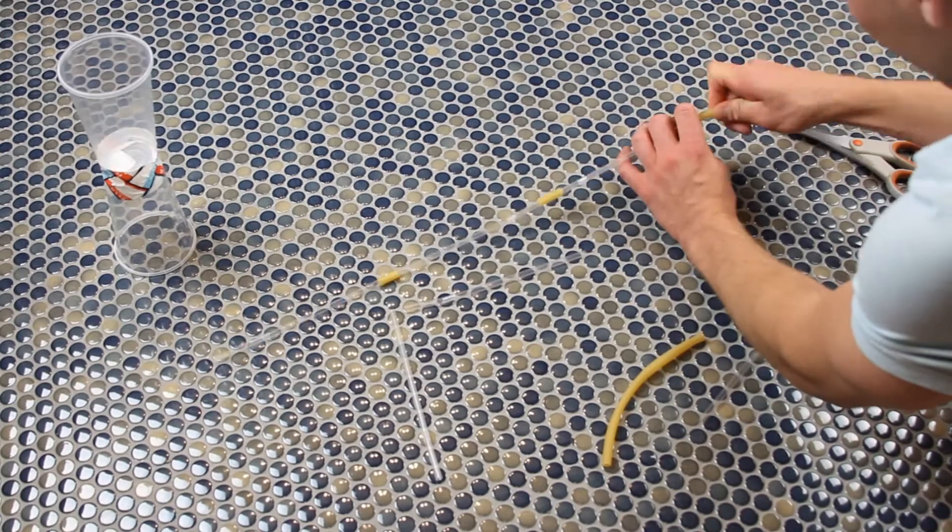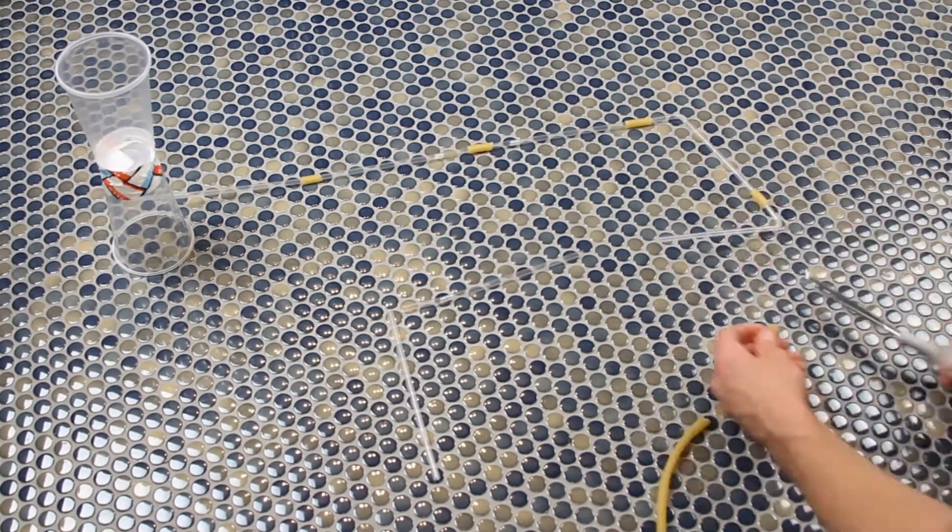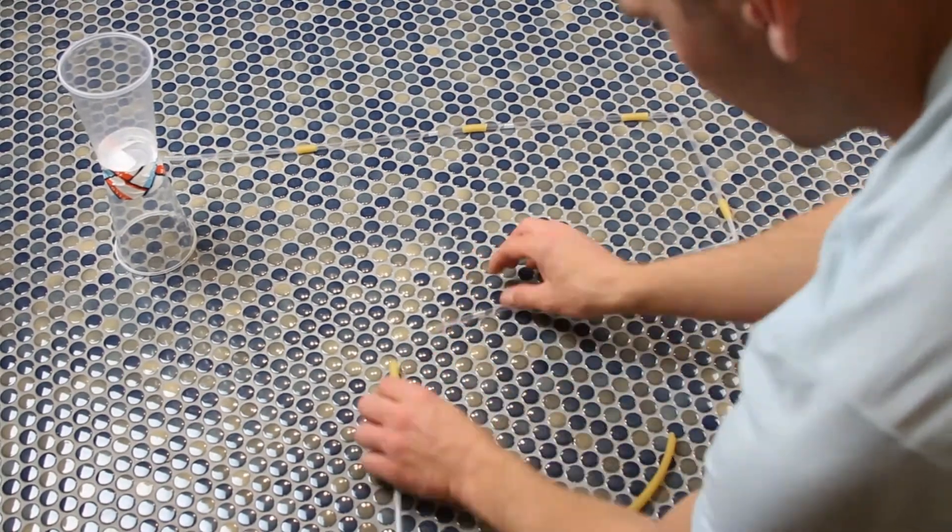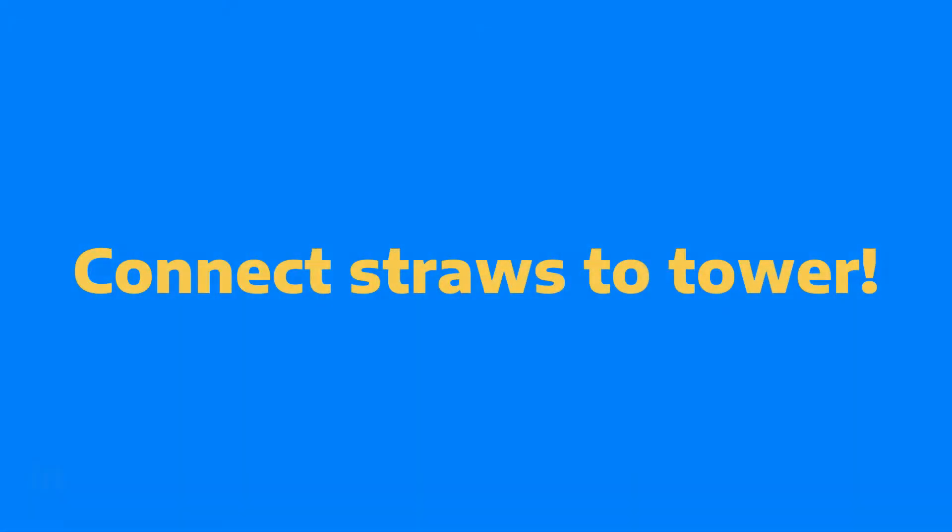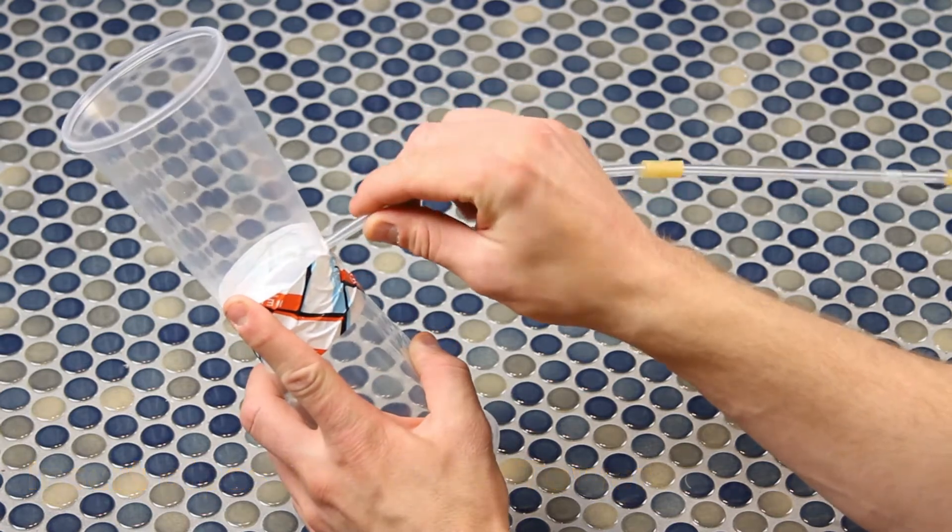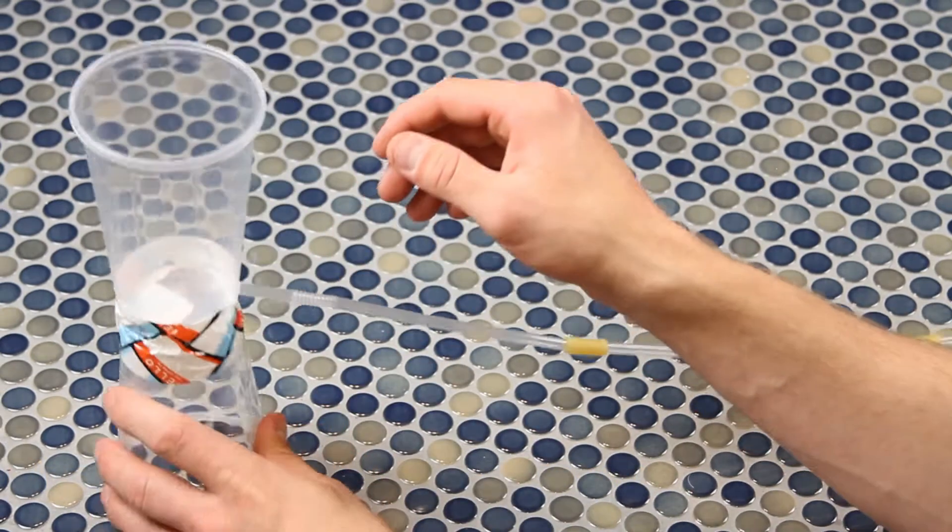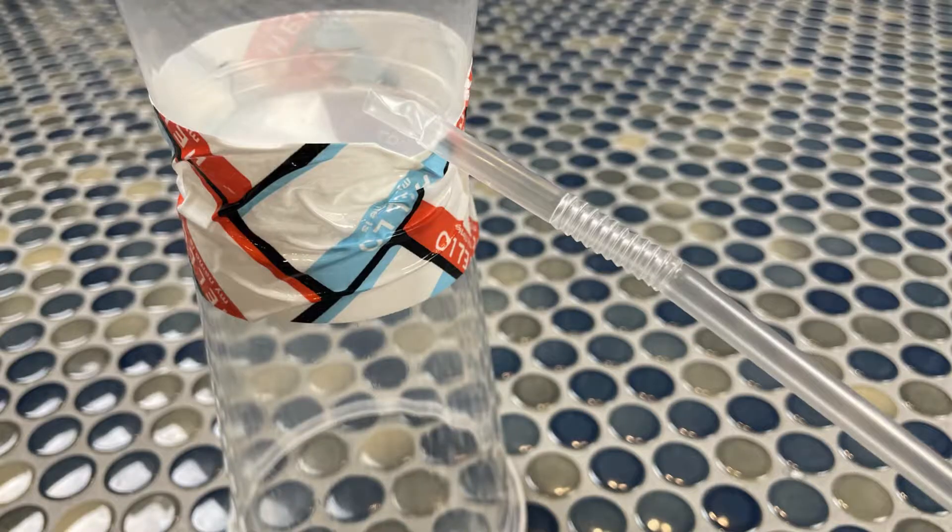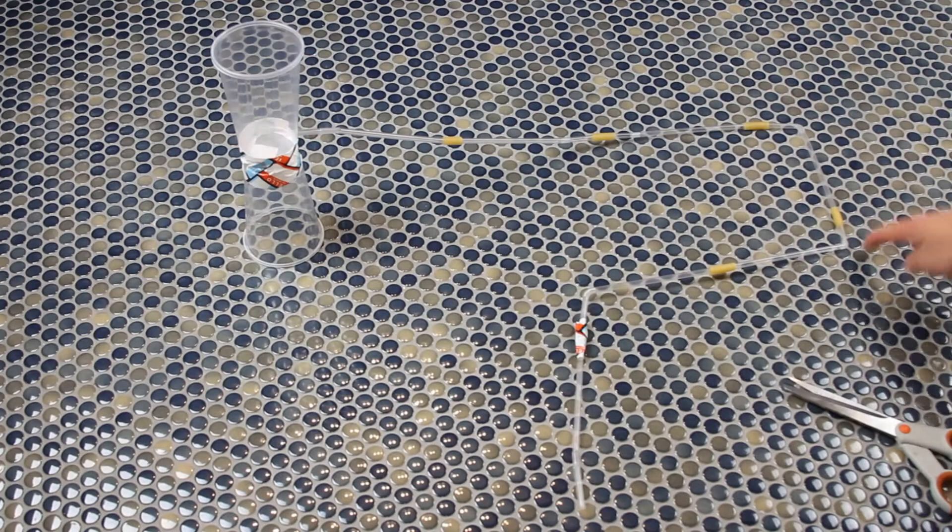Next up, we want to connect our pipeline to the water tower. The fit is designed to be a little snug, so give the straw a little twist when you put it in the hole in the cup. Remember, we're going to be running water all the way through our pipeline.